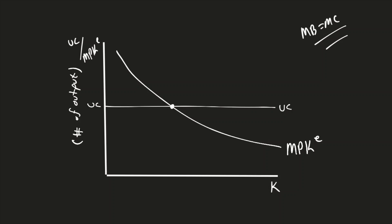Where they cross is our profit maximizing point, where the user cost of capital equals MPKE. MPKE is our benefit, the user cost of capital is our cost. So this is K star, the optimal level of capital.